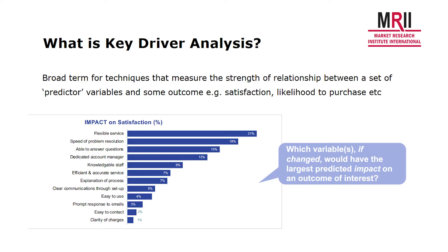What we're trying to do is measure the strength of relationship between the thing we're most interested in — so that might be satisfaction, likelihood to purchase, recommendation, or brand preference — and what we call predictors: the sorts of product features or service features that a client company will seek to deliver. We're looking at the impact of a variety of different service attributes, like flexible service, speed of problem resolution, and their impact on satisfaction.